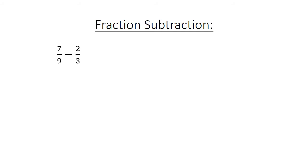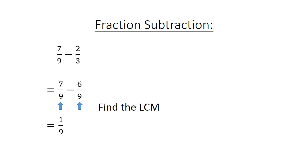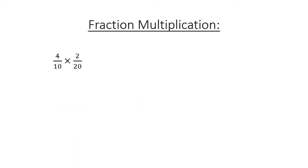Fraction multiplication. 4 over 10 times 2 over 20 equals. 4 times 2 equals 8, and 10 times 20 equals 200. Simplify: 8 over 200 simplifies to 4 over 100, then simplify again to 1 over 25.